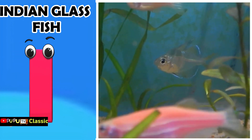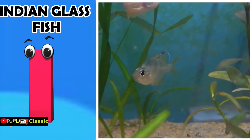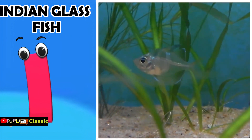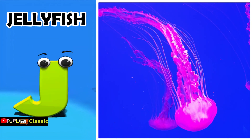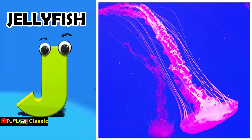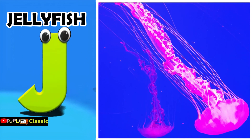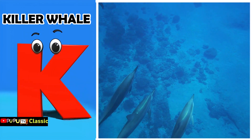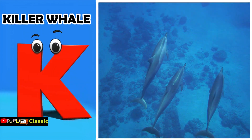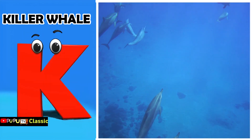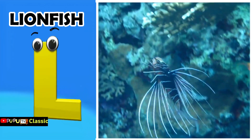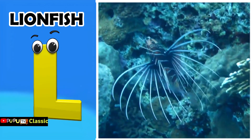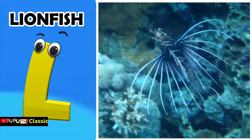I is for Indian glass fish. Eh, eh, Indian glass fish. J is for jellyfish. Juh, juh, jellyfish. K is for killer whale. Kuh, kuh, killer whale. L is for lionfish. Luh, luh, lionfish.